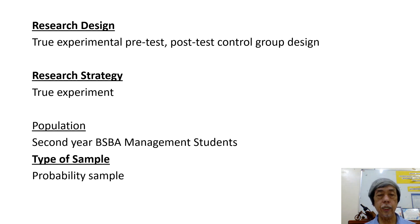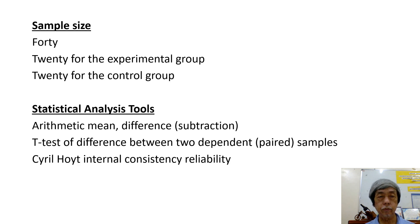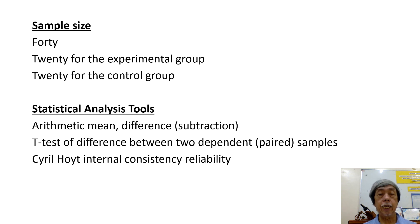The research design is true experimental pre-test post-test control group design. The research strategy is true experiment. The population is the second year BSBA management students. The type of sample is probability sample. The sample size is 40 — 20 for the experimental group and 20 for the control group. The statistical analysis tools are arithmetic mean, difference, the test of difference between two dependent or paired samples, and Cyril Hoyt internal consistency reliability.